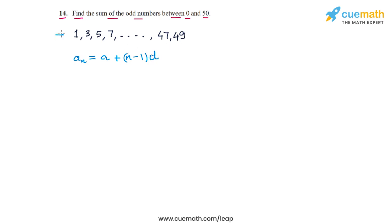The last term of this progression of odd numbers is 49, the first term is 1, and the common difference is 2. So let's plug in the values into this relationship and find the value of N. So AN is 49, so 49 equals A1 plus (N minus 1) times D, and D equals 2.